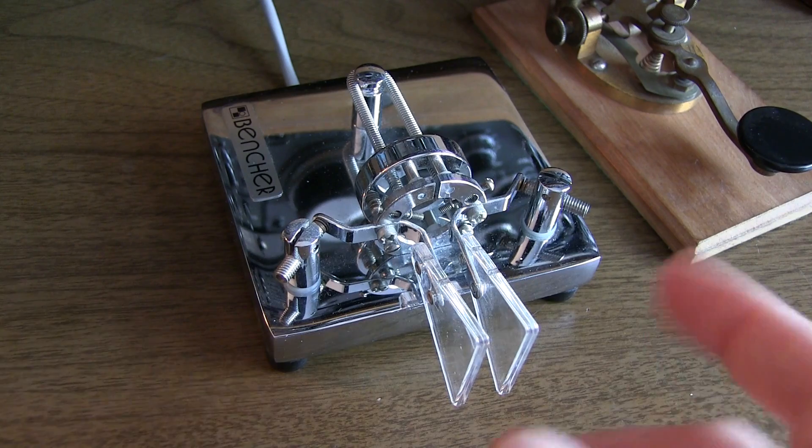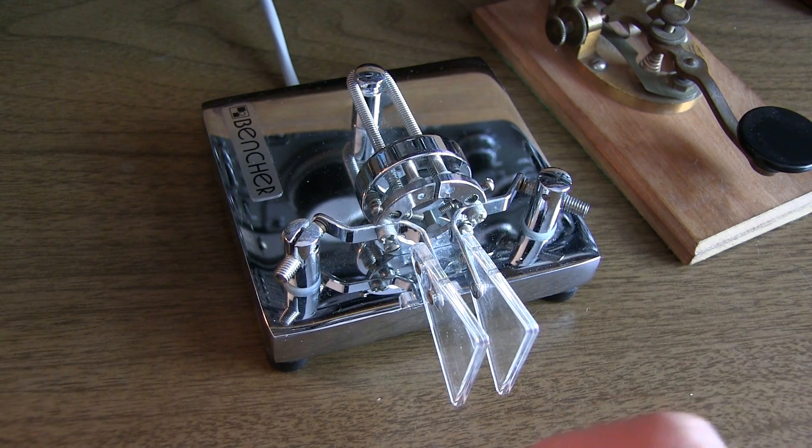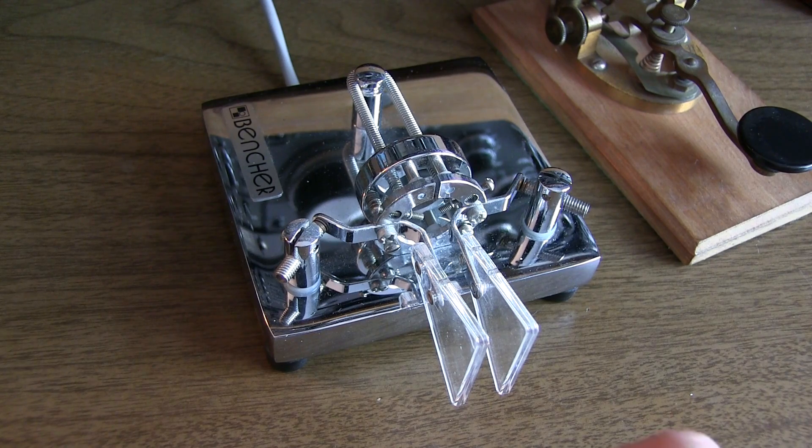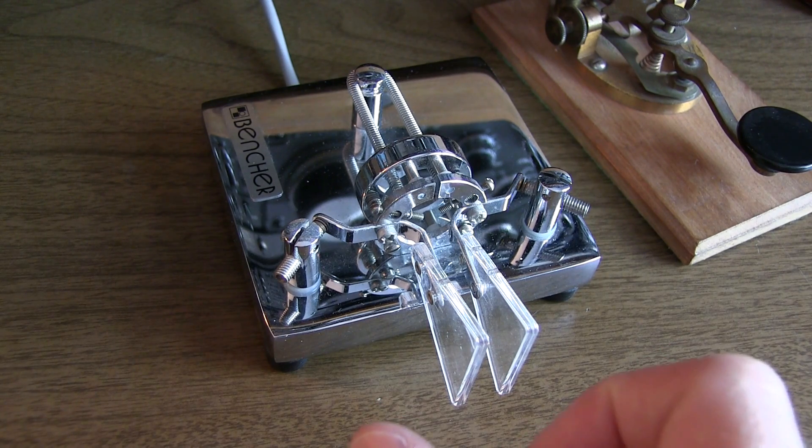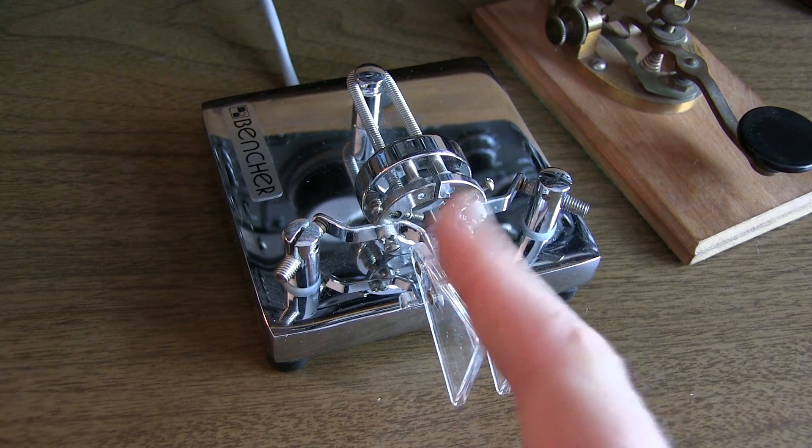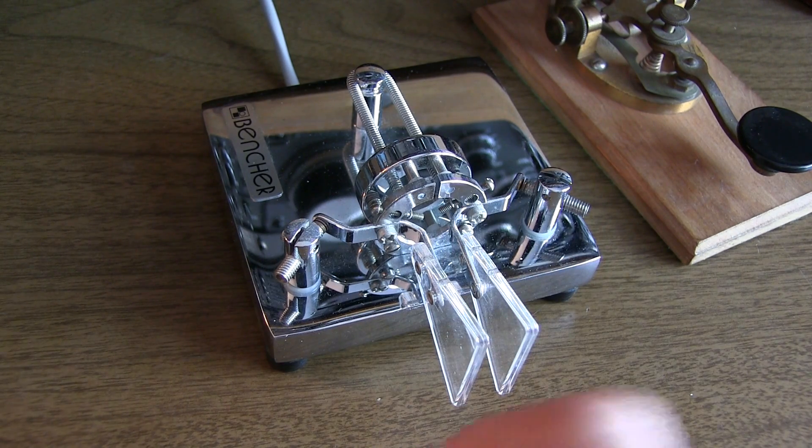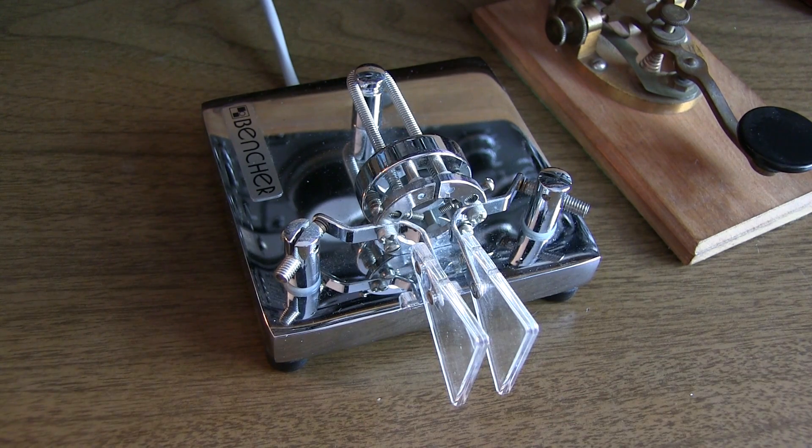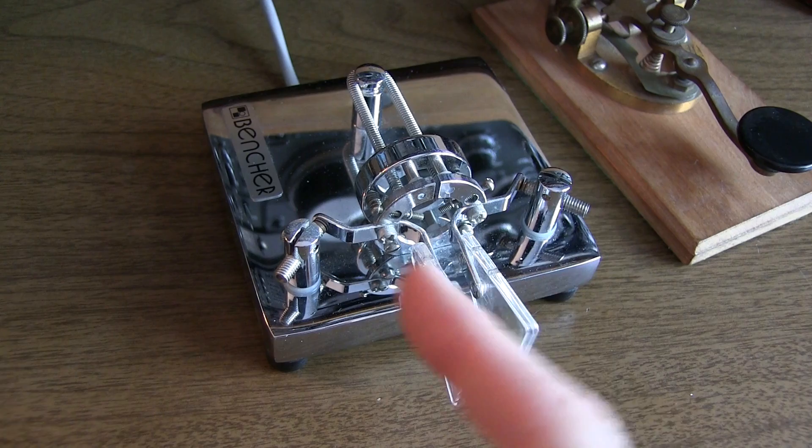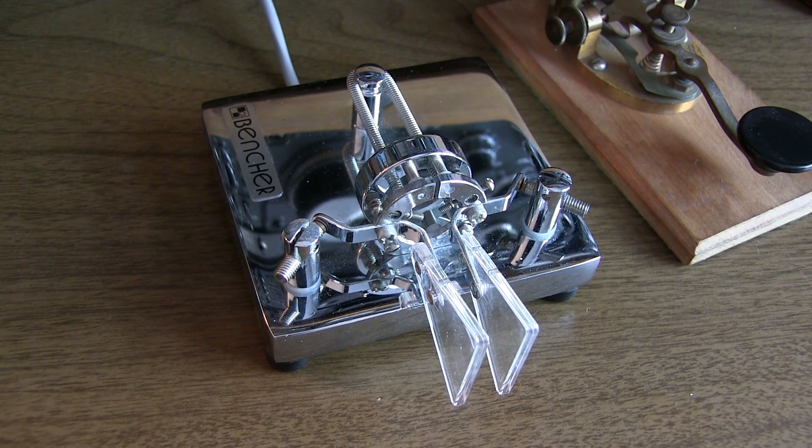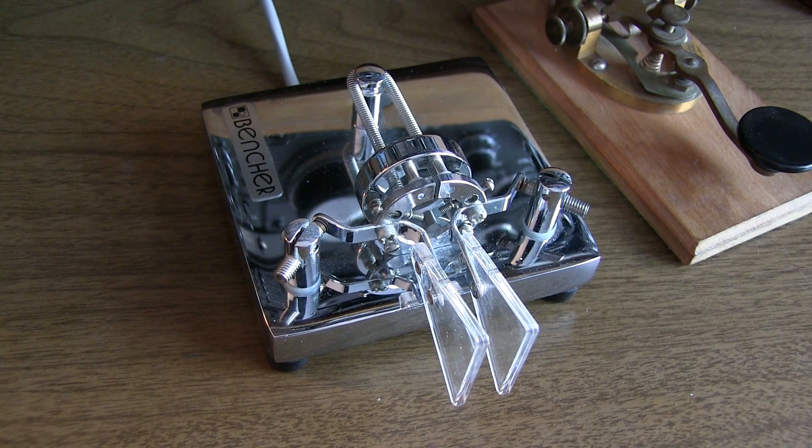So I've shown you just two of the basic elements that are used or components that are used for sending Morse code. There are other mechanical keyers, one called a bug, for example, that will automatically form repeating dits by a vibrating mechanism within the mechanical keyer itself. It doesn't require an electronic keyer like a set of paddles do. There's also a single lever paddle that can be used with the keyer just like we were doing here, except you won't have the iambic or the squeeze modes with that.